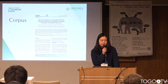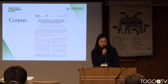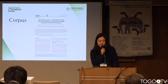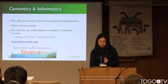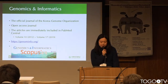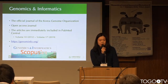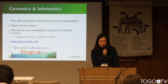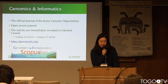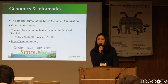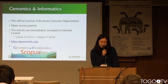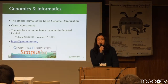The Genomics and Informatics Corpus was published in 2018 by Professor Park and others. Genomics and Informatics is the official journal of the Korean Genome Organization. It is an open-access journal, and all the articles are immediately included in PubMed Central. Recently, it has been indexed in Scopus.